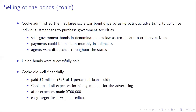Cook does well financially, getting a commission of three-eighths of 1% on all loans sold, collecting $4 million in fees. After paying all the expenses of his agents and advertising, he makes about $700,000, but he is very much criticized — seen as a villain by newspaper editors as a profiteer off the financing of these bonds.